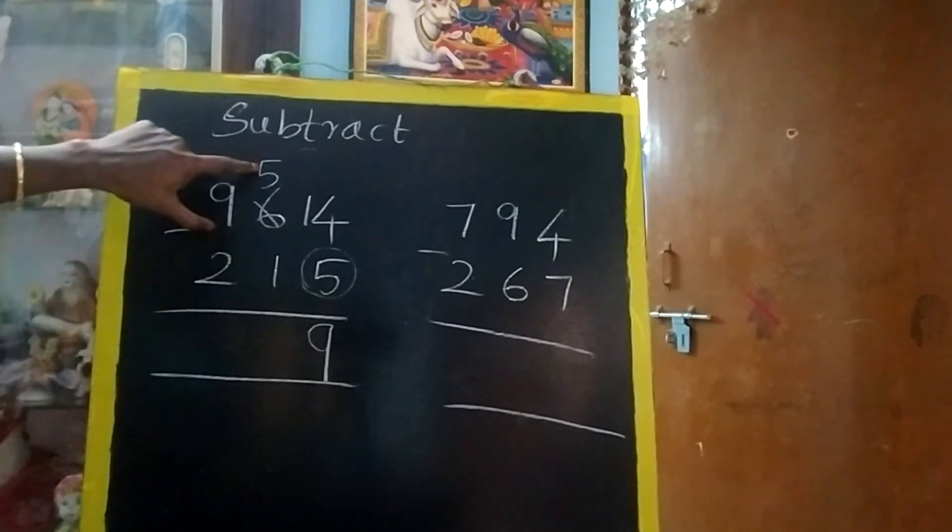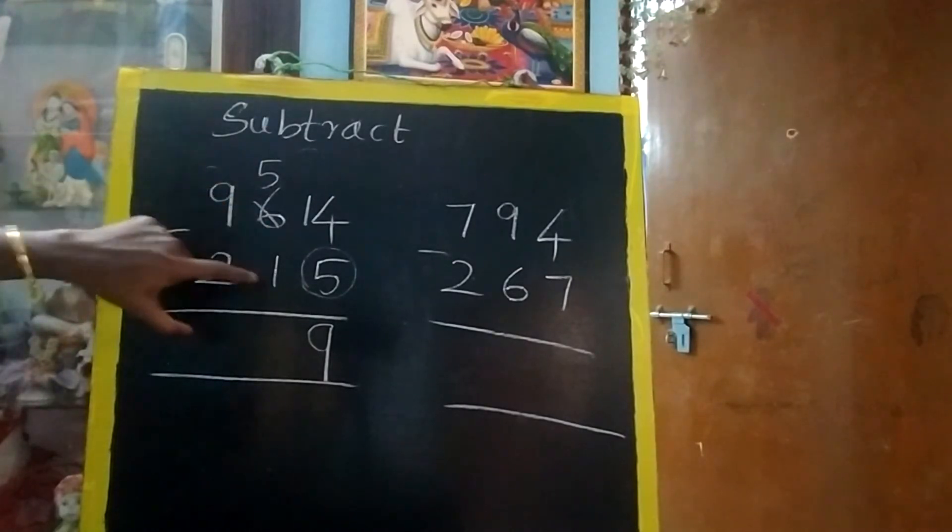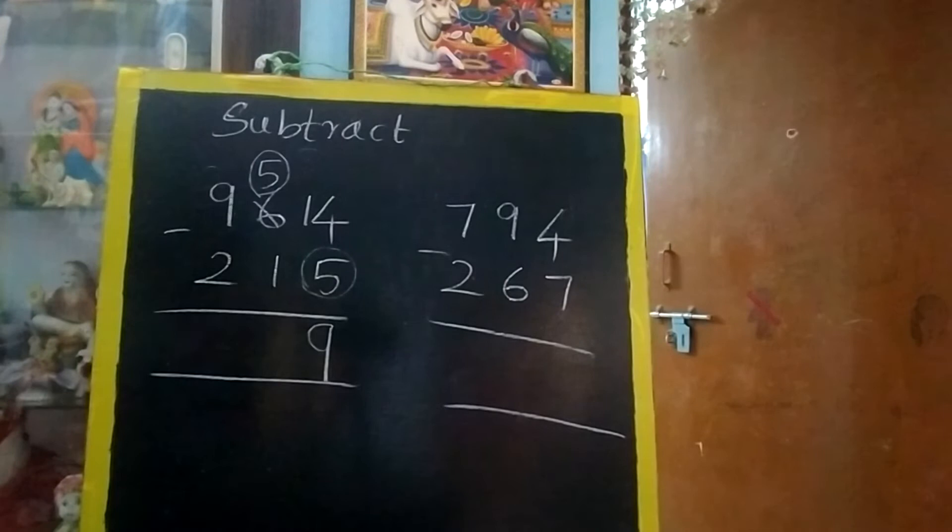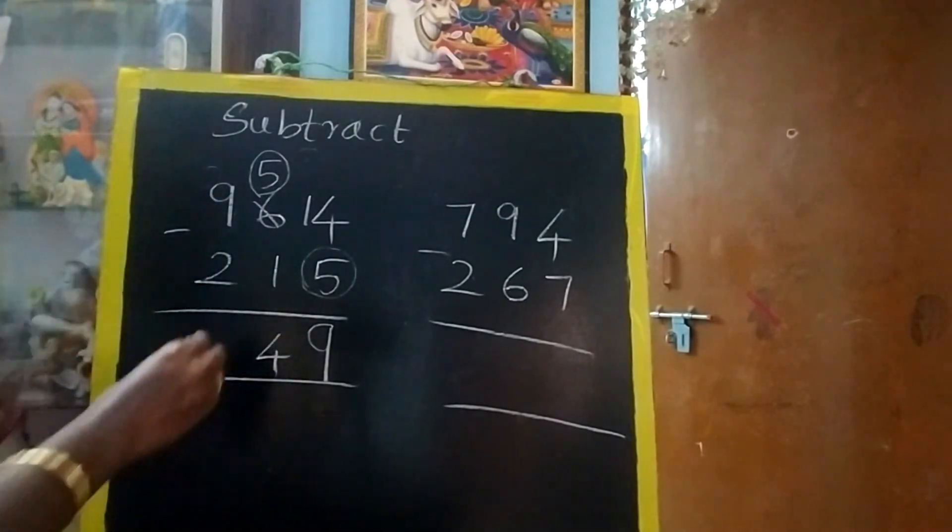Now again circle. Many will think no need. Why should I use in ten's place? Now ten's also you have to check whether borrowing is needed. Which is greater? 5 is greater. So circle is top. No need to borrow. 5 minus 1, 4. 9 minus 2, 7.